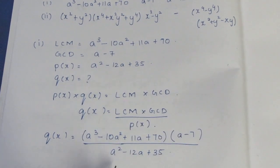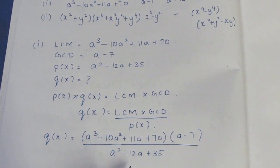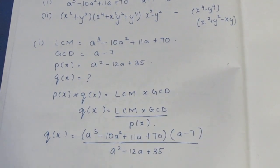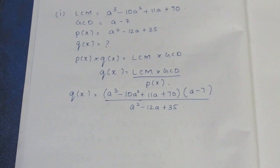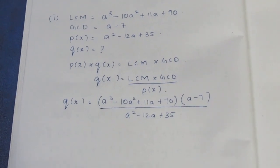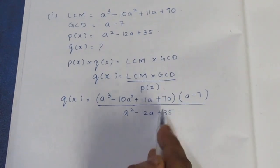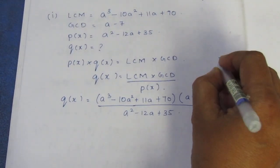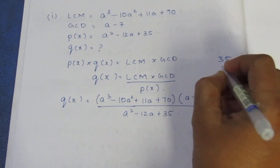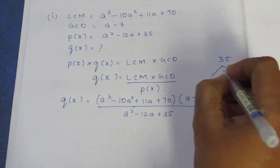P of X is equal to a² minus 12a plus 35. We can split the middle term. The product of the constant and leading coefficient gives us the product; we split minus 12.